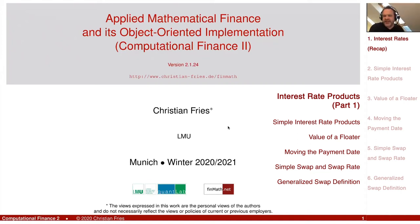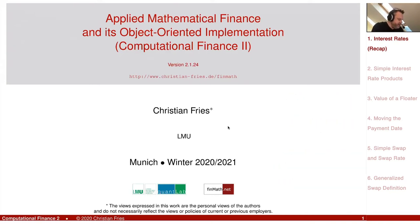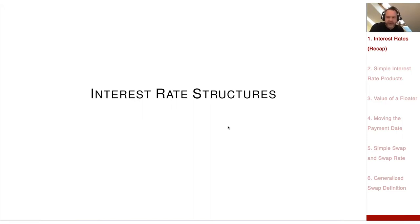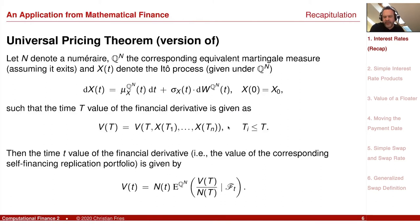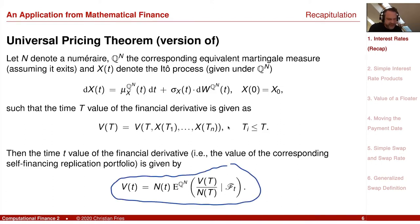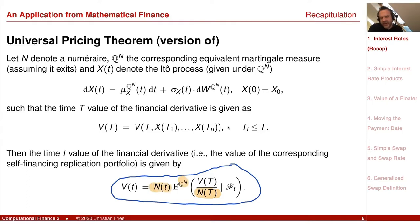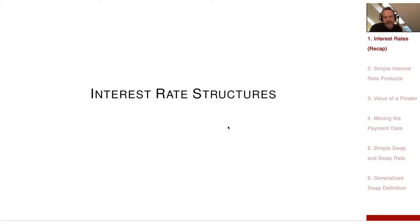In today's lecture on Applied Mathematical Finance, we continue our session on Interest Rates. From the very first lecture, we will make use of the Universal Pricing Theorem, so that we can value financial products or cash flows by taking a conditional expectation with respect to some special measure — an equivalent martingale measure. Once we have divided the cash flow by the corresponding numeraire, the objects become martingales.